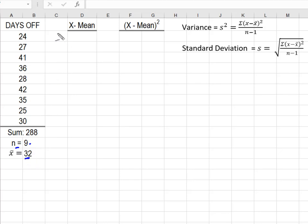So I'm going to take each value and I'm going to subtract it from the mean of 32 to give me that distance. And I know that I'm negative 8. 27 minus 32 is negative 5.